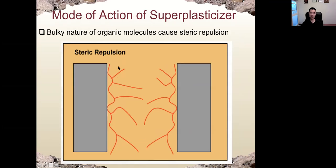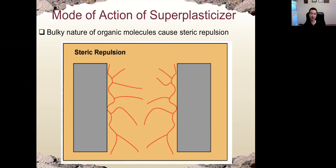The third mode is called steric repulsion, due to the nature of the molecule. The PCE molecule has long arms. They bind on the surface of the particles. Due to the nature of these long arms, the particles will repel each other — we call that steric repulsion.